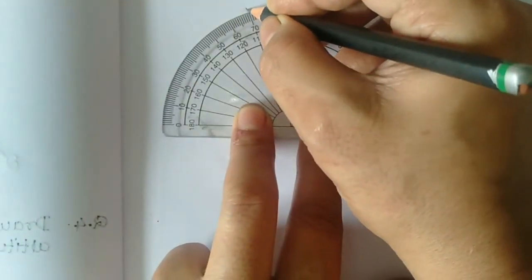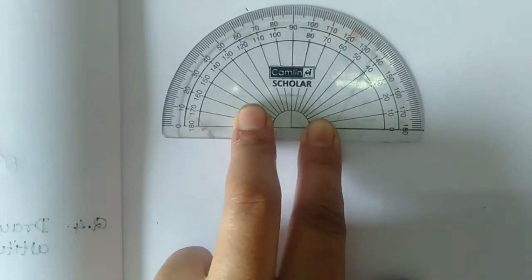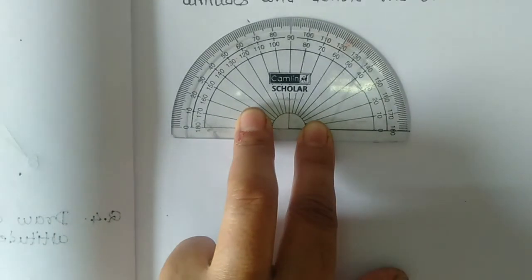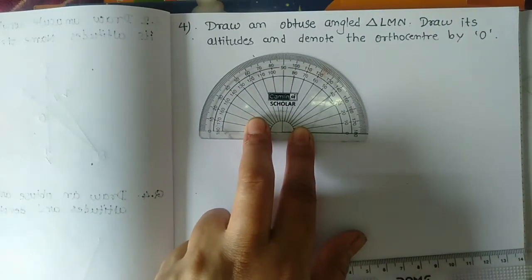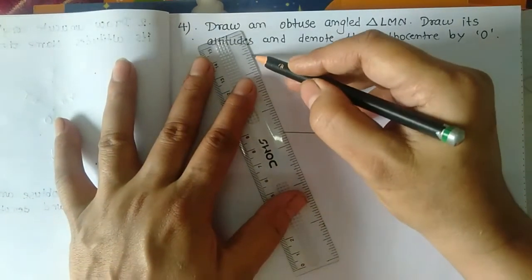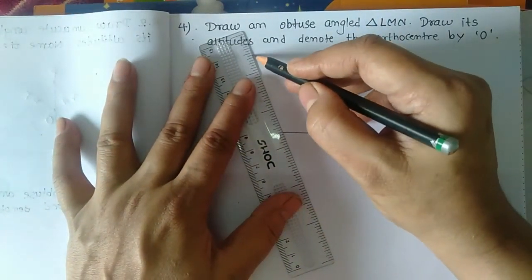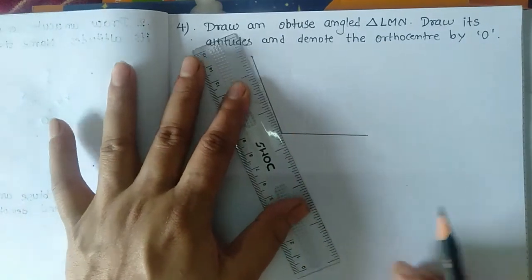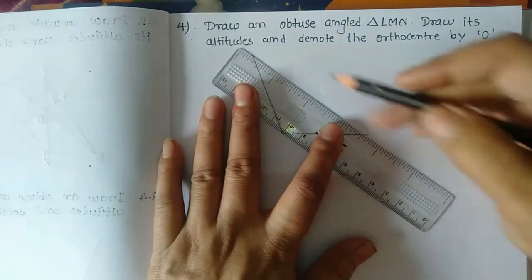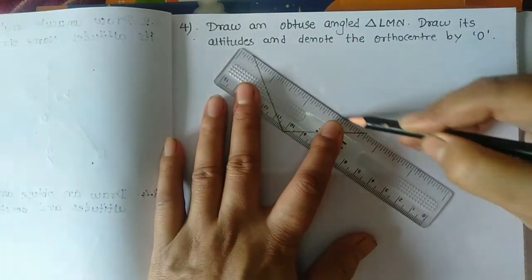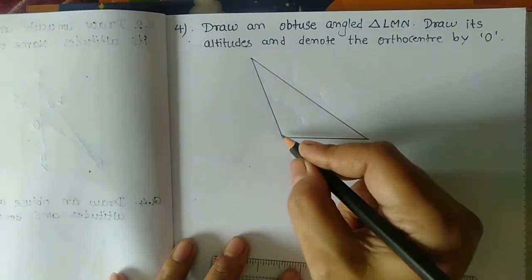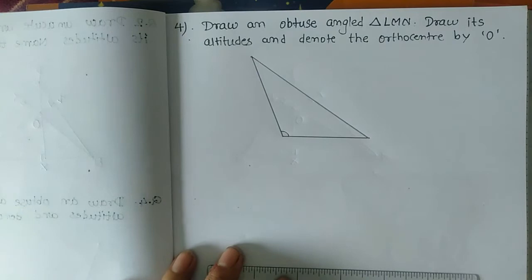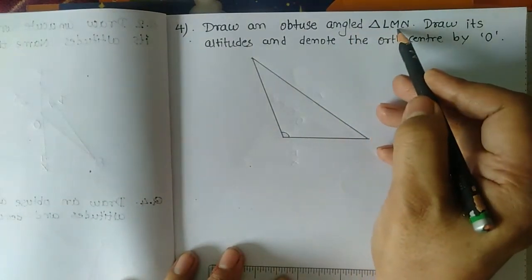Here I am taking 110 degrees. Join this point. Join these two arcs. This is the obtuse angled triangle. Label it LMN.